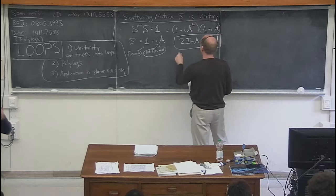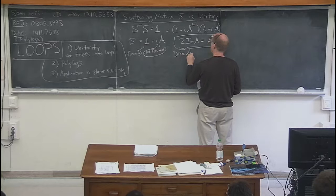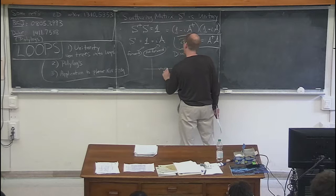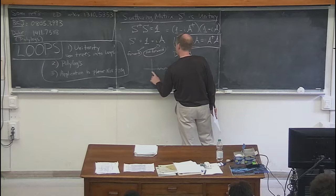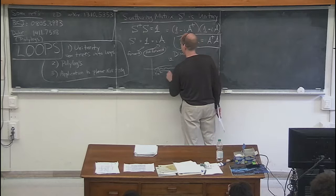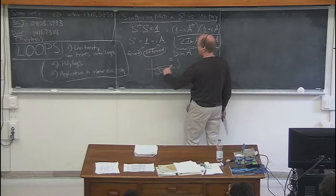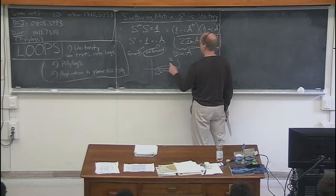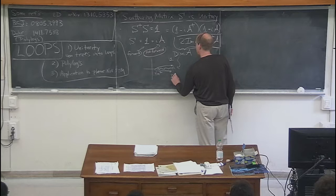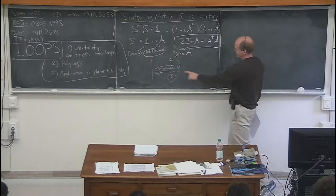This is often called the discontinuity — twice the imaginary part. Generally, for a 2-to-2 reaction with masses, there will be a cut in the s-plane at 4m squared, and the difference going from one side of the cut to the other is twice the imaginary part of the amplitude evaluated on one side. The imaginary part flips sign as you go across the cut, so going from one side to the other is referred to as the discontinuity.